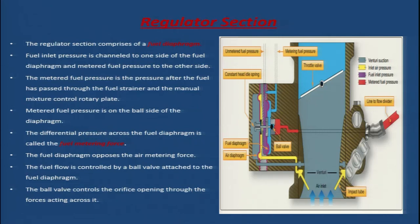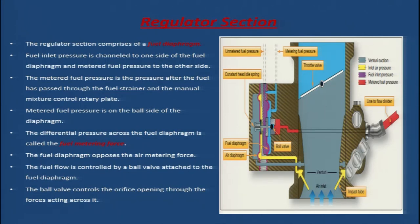Fuel inlet pressure is channeled to one side of the fuel diaphragm and metered fuel pressure to the other. The metered fuel pressure is the pressure after the fuel has passed through the fuel strainer and the manual mixture control rotary plate — it is the lower pressure and is on the ball side of the diaphragm. The differential pressure across the fuel diaphragm is called the fuel metering force.